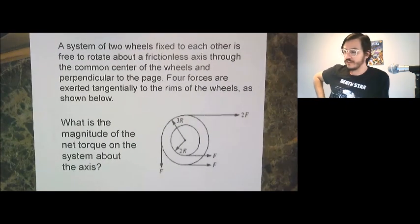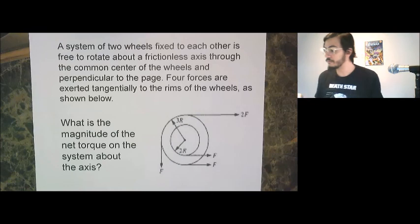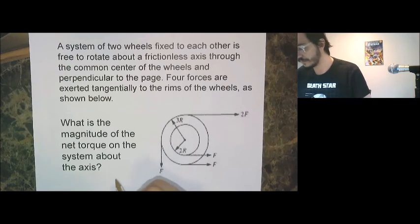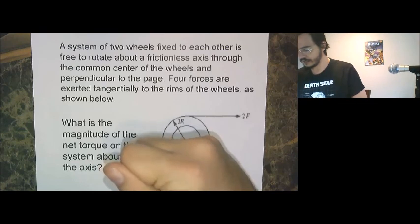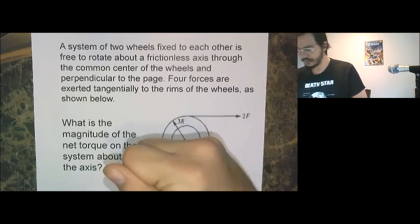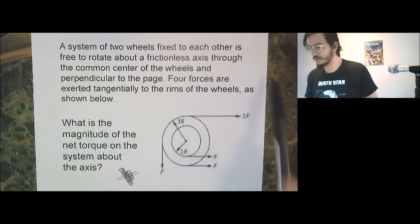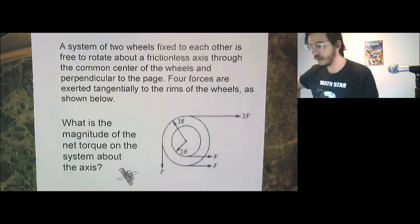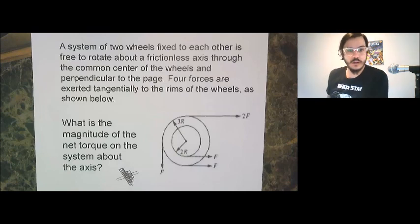An example problem for you. We have a system of two wheels, an inner wheel and an outer wheel. An example, apparently they're actually next to each other. So we would have, if we viewed this from like above, we've got a bigger wheel and a smaller wheel. So something more like that. So system of two wheels fixed to each other is free to rotate around a frictionless axis through the common center of the wheels and perpendicular to the page. Four forces are exerted tangentially to the rims of the wheels as shown below. What is the magnitude of the net torque on the system about the axis?